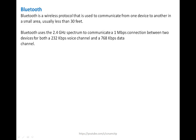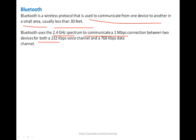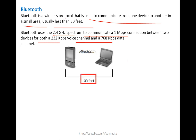Bluetooth is a wireless protocol used to communicate from one device to another in a small area, usually less than 30 feet. Bluetooth uses the 2.4 GHz spectrum to provide a 1 Mbps connection between two devices, supporting both a 232 kbps voice channel and a 768 kbps data channel. With Bluetooth you can connect and communicate with devices, but the distance should not be very long.